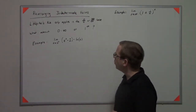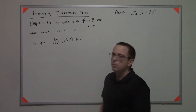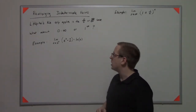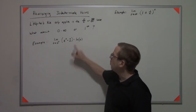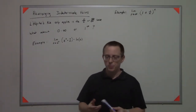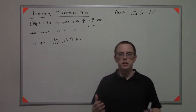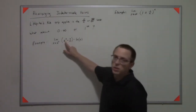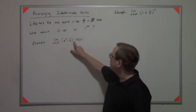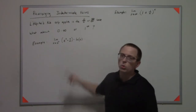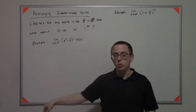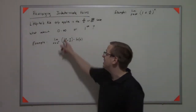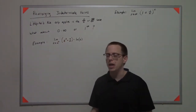The first example is the limit as x approaches 0 from the positive side of (e^x - 1) times the natural log of x. If you plug in 0, e to the 0 is 1, so 1 minus 1 is 0, and as x goes towards 0, the natural log of x approaches negative infinity. So this is a 0 times negative infinity case.